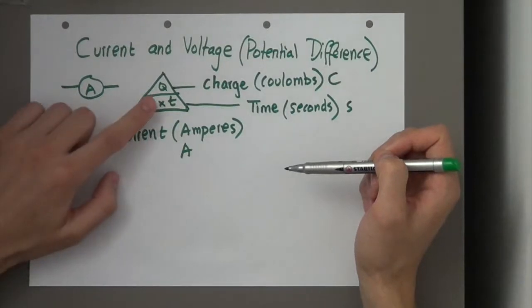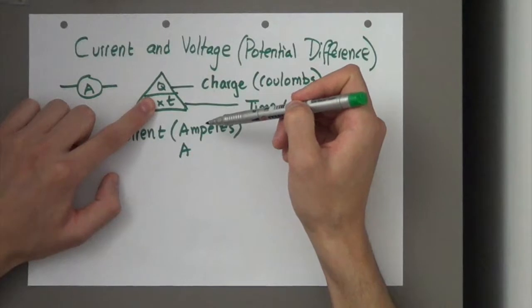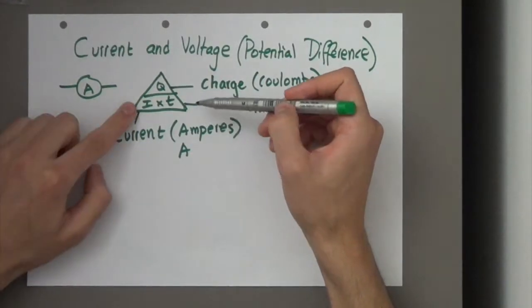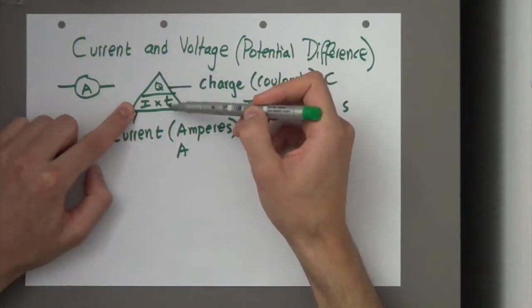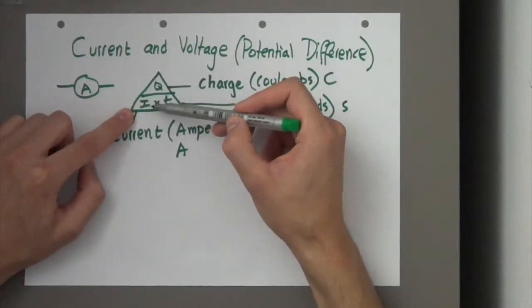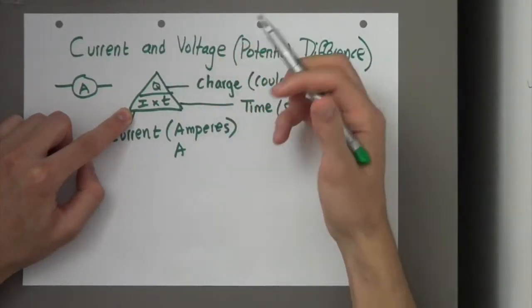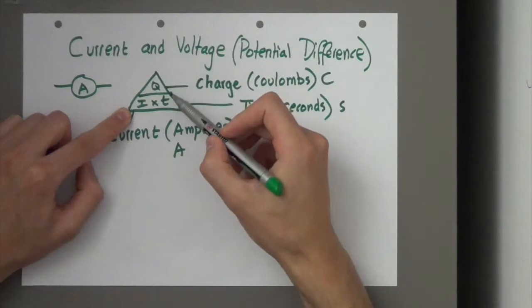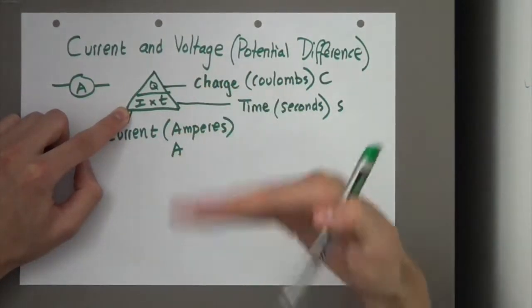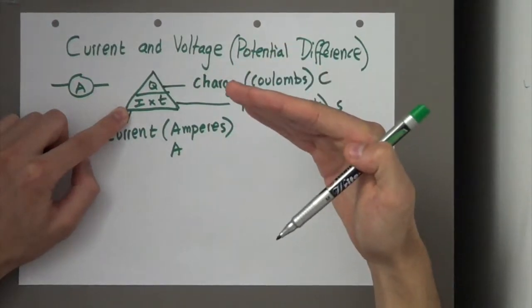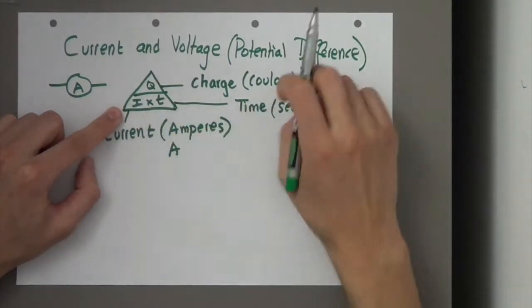But, how does this triangle work? If I cover up the I, it means it's Q divided by T. So, what is it telling us? It's telling us that there's a certain amount of charge divided by a certain amount of time. So, if we're going to have a large current, it means we can either have a large amount of charge, loads and loads of electrons present at a particular point, or a small amount of time. Meaning, that amount of charge is moving past this point very quickly in a short amount of time. So, that's how we get a high amount of current.